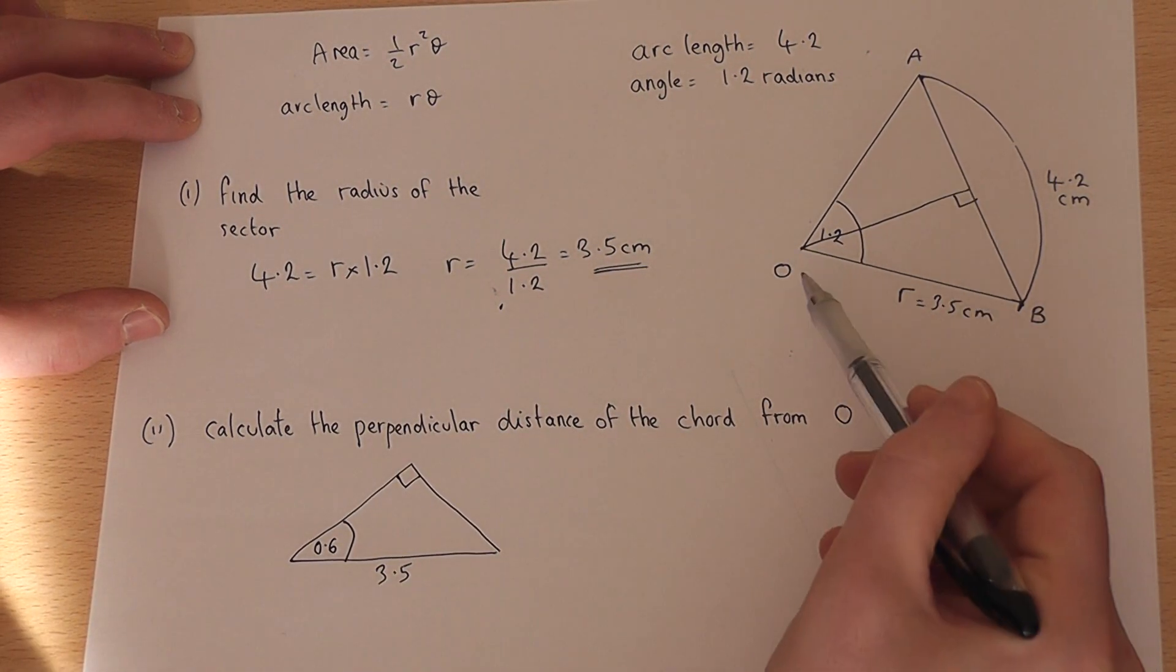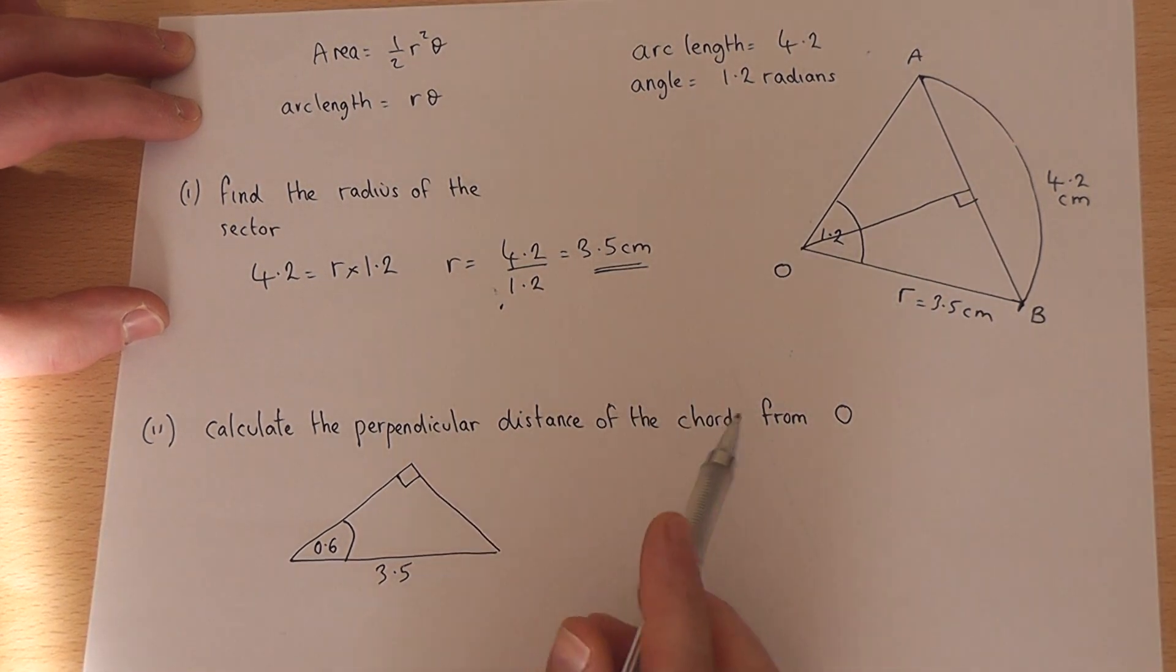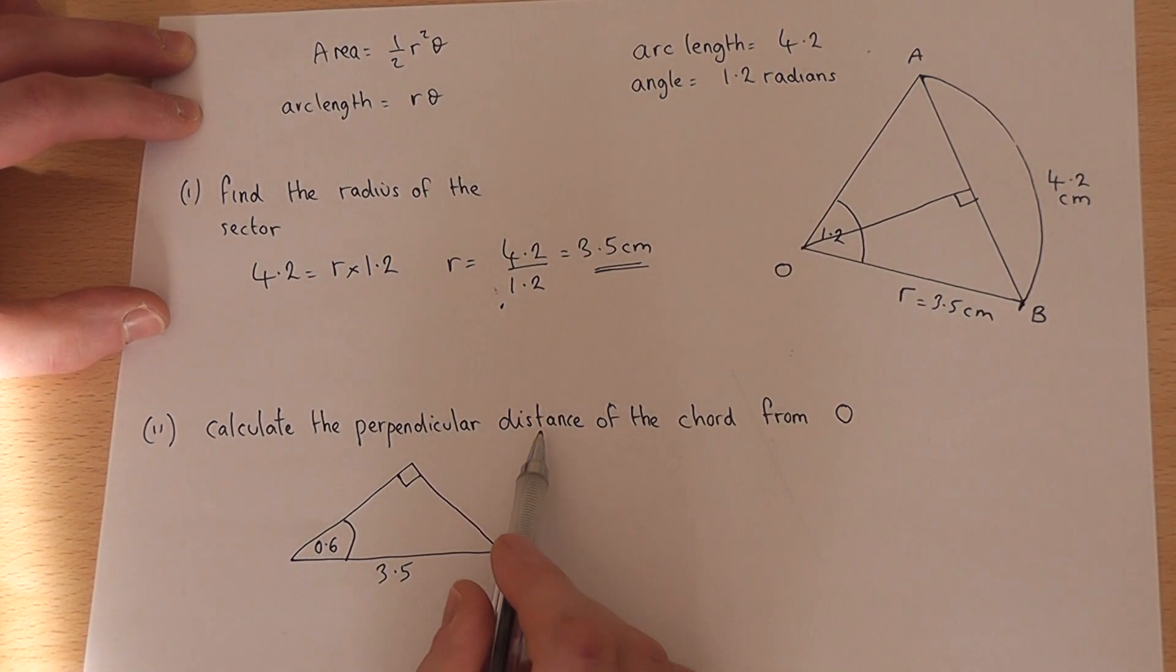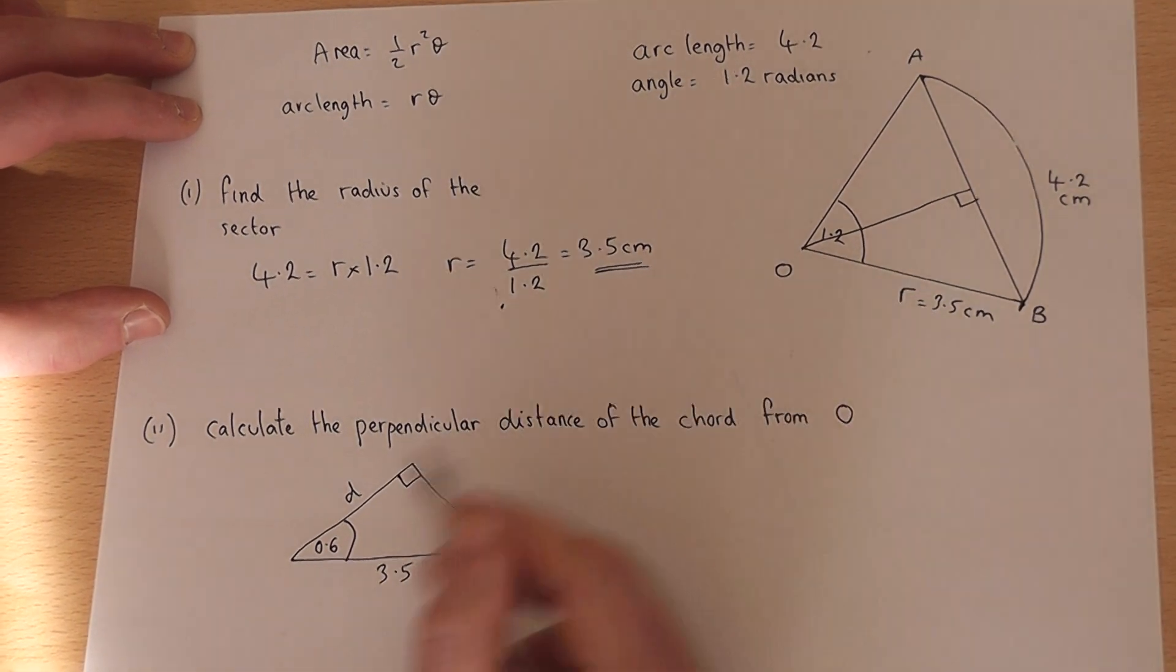Again, this distance here, or this length, will bisect, i.e. cut the angle in half. And I want to find the length or the distance, we'll call it d. So to find d,